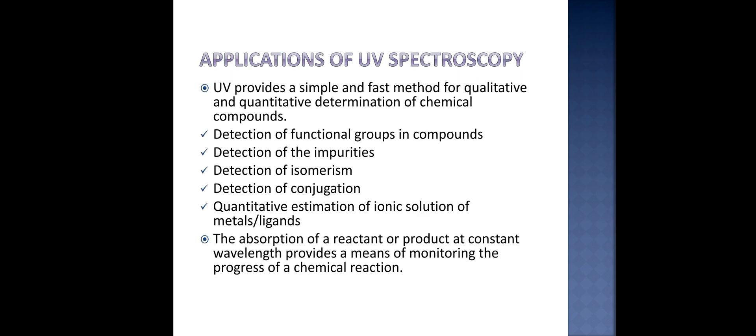Applications of the ultraviolet visible spectroscopy. UV provides a simple and fast method for qualitative and quantitative determination of chemical compounds, like detection of functional groups in compounds, detection of impurities, detection of isomerism, detection of conjugation, quantitative estimation of ionic solution of metals or ligands. The absorption of a reactant or product at constant wavelengths provides some means of monitoring the progress of a chemical reaction.